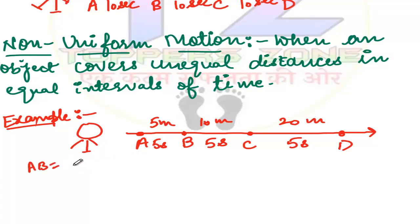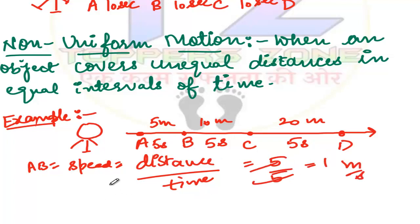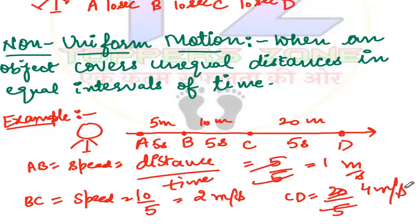If you find out the speed, it is distance upon time. If you see A to B, distance is 5m and time is 5s, so speed is 1 meter per second. For B to C, distance is 10m and time is 5s, so we get 2 meter per second. For C to D, distance is 20 meters and time is 5s, giving us 4 meter per second. You can check that the speed is completely different, not constant - first 1 meter per second, then 2 meter per second, and then 4 meter per second. This type of motion is called non-uniform motion.